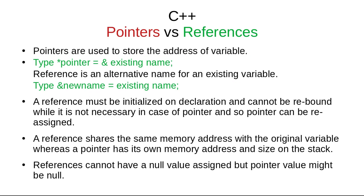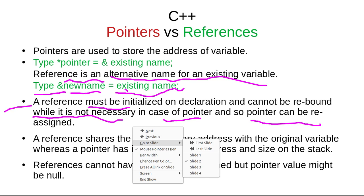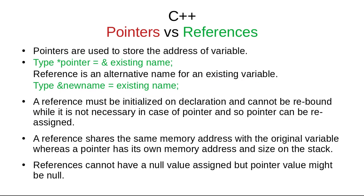A reference is just an alternative name for an existing variable. We define it as: reference_type& new_name = existing_name. This means new_name is an alias for existing_name. A reference must be initialized on declaration and cannot be rebound, while a pointer does not have this restriction and can be reassigned to point to any variable later on.